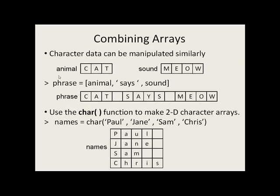Character data can be manipulated in the same way. In this example, we have animal, which is a 1 by 3 with three characters. Sound is a 1 by 4 array. We can make a much larger array called phrase, where the first three elements will be the same elements as in animal, then we'll have some characters in says within the single quotes. Lastly, we'll have the elements in sound, which is M-E-O-W.